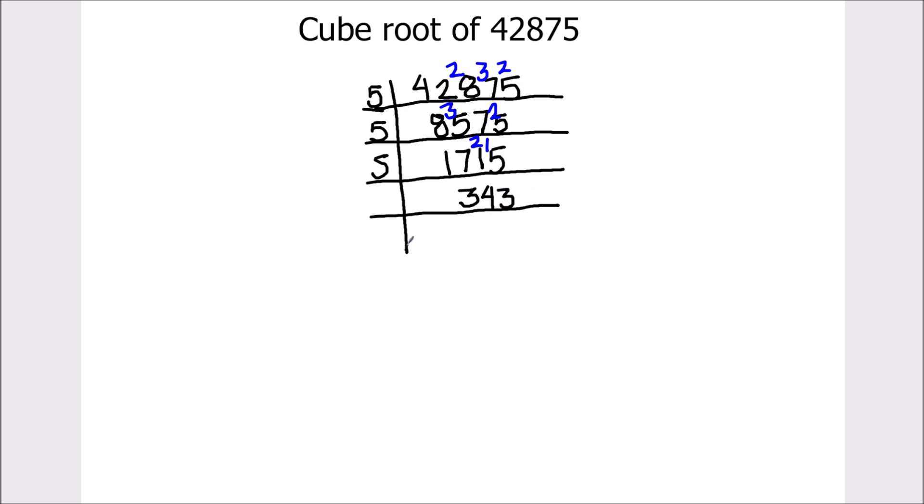Now 343 is not divisible by number 5, so let's take number 7 and divide it by number 7. 7 times 4 is 28, 6 is remainder, this becomes 63 and 7 times 9 is 63.